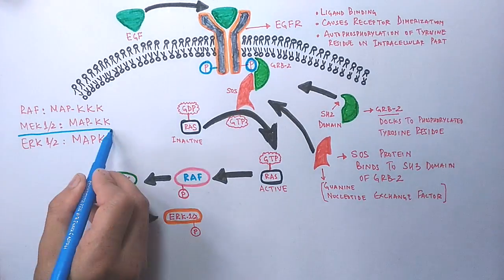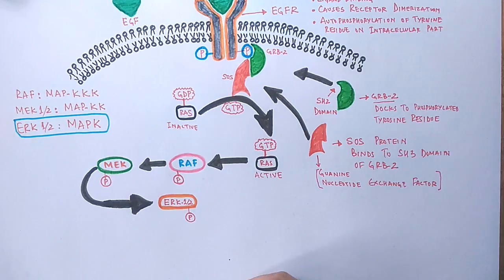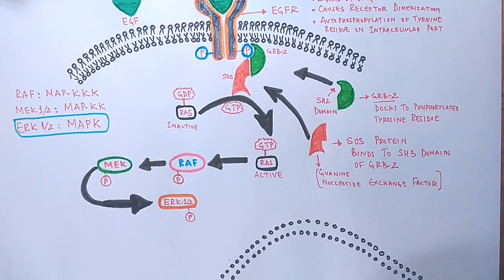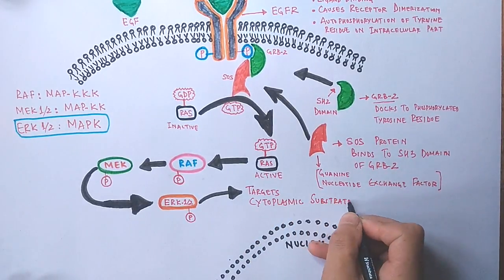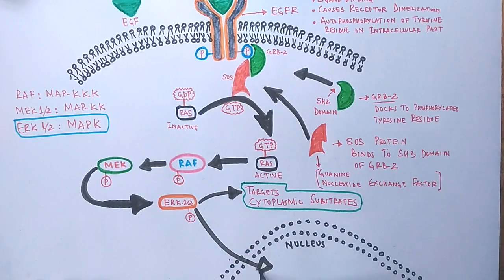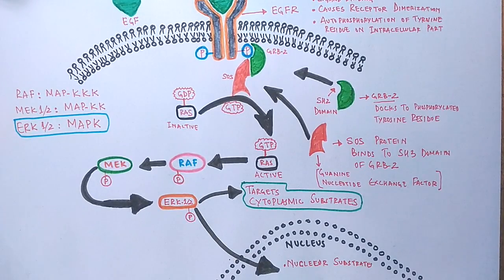This molecule is the outcome of the kinase cascade, and this ERK or MAPK molecule will now act on different transcription factors and regulate their function. The ERK1/2 has two target sites: either it targets the cytoplasmic substrates, or it directly gets into the nucleus and targets the transcription factors.